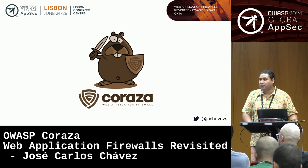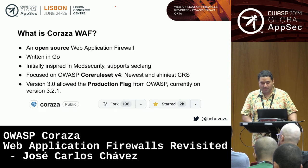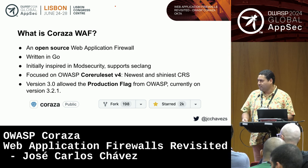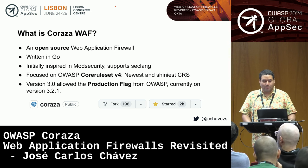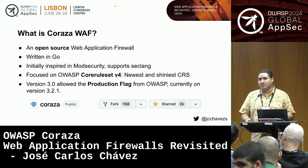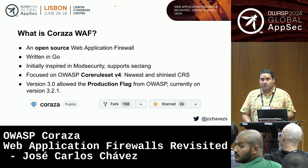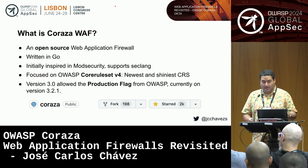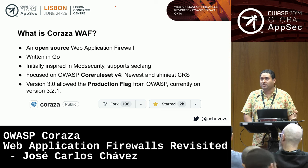Let me introduce Coraza WAF. It's an open-source web application firewall — in the times when 85% of WAFs are proprietary, we have an open-source option. It's written in Go, initially inspired by ModSecurity. The original idea was to be a drop-in replacement, but at some point we decided to take our own path while still supporting SecLang. It's focused on the CRS v4, the de facto standard rule set for WAFs. Version 3 received the production flag from OWASP, and we are currently at version 3.2.1. We have 2K stars on GitHub.